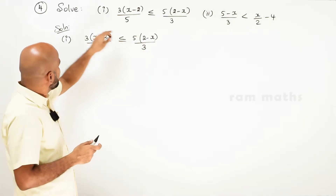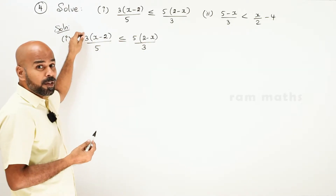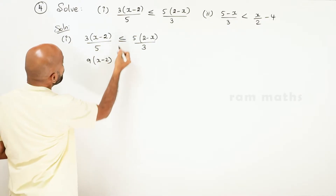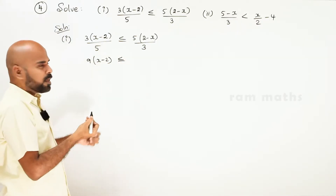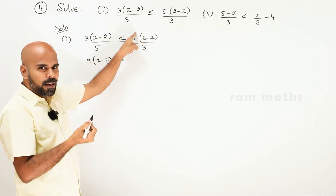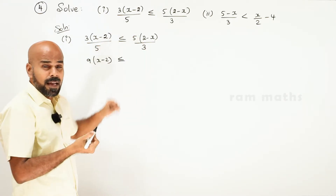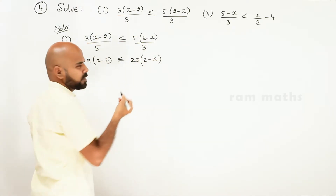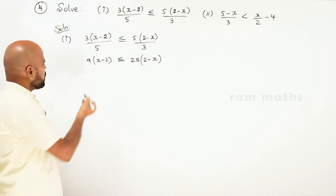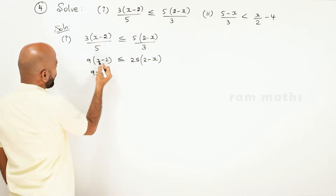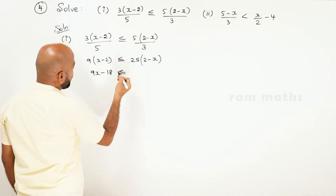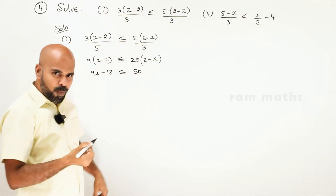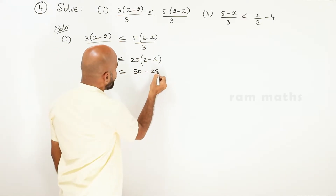In the denominator, divided by 3, we have to solve it. In the numerator, there is already a 5. So, 5 into 5 is 25, into 2 minus x. 9 is equal to 9. 9x minus 2 into 9 is minus 18, less than or equal to 25. 25 into 2 is 50.